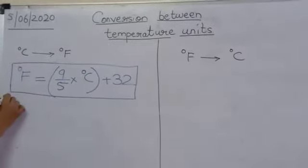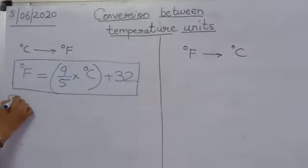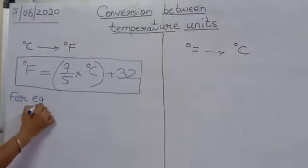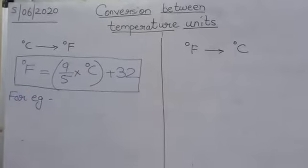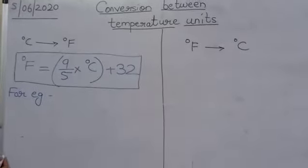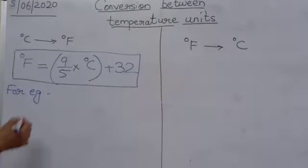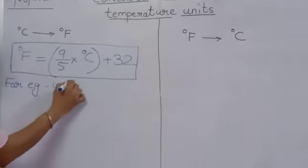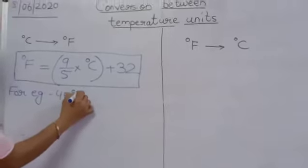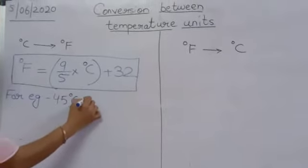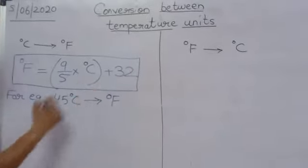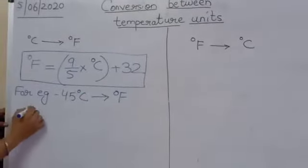Now let us take an example. For example, we have to change 45 degree Celsius to degree Fahrenheit. Now how will we change it?